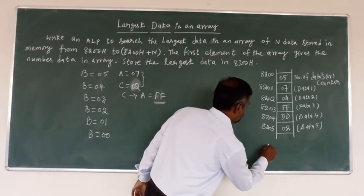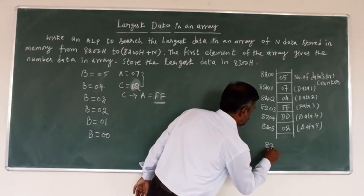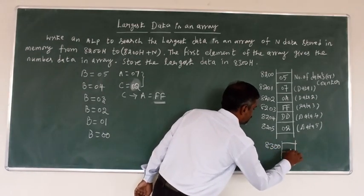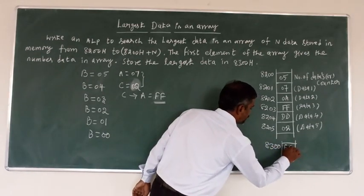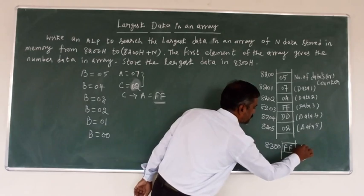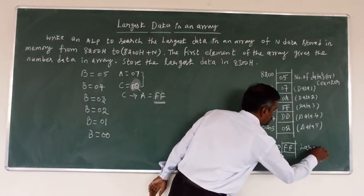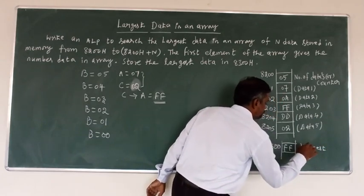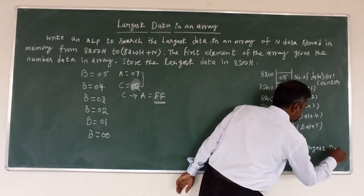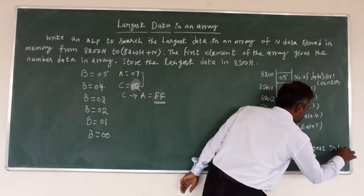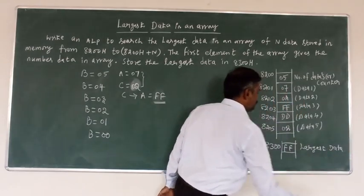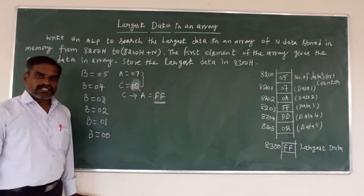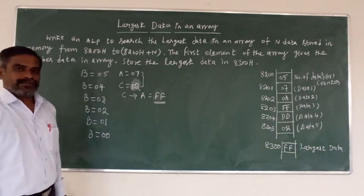When B register is 00, the largest data is available in the A register. Store that to address 8300H. This is the concept for finding the largest data.